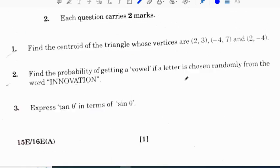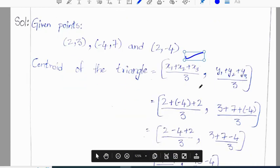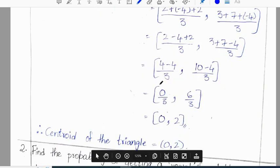Section 1, first question: find the centroid of the triangle whose vertices are (2, 3), (-4, 7) and (2, -4). The centroid formula is (x₁ + x₂ + x₃)/3, (y₁ + y₂ + y₃)/3. Replacing these three points in the formula, we will get the answer as (0, 2). The centroid of the given vertices is (0, 2).